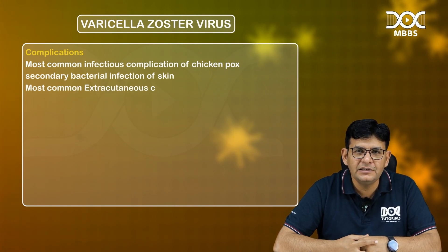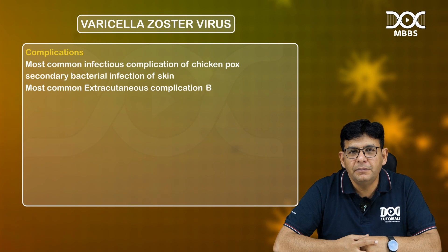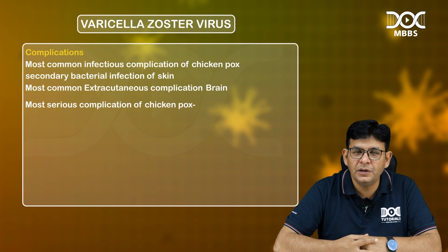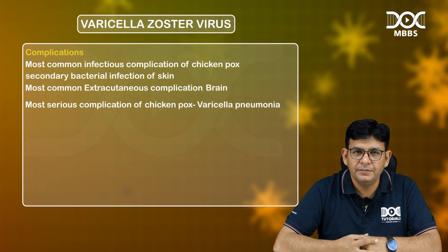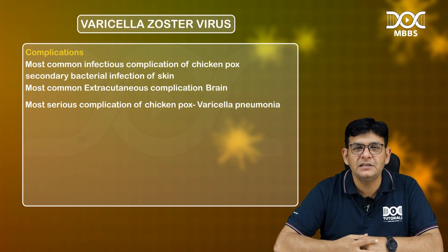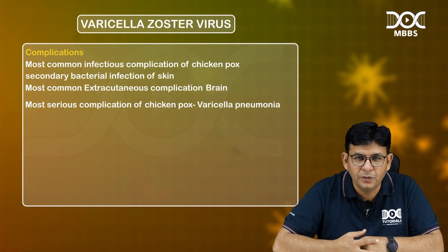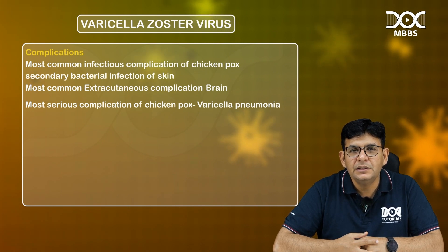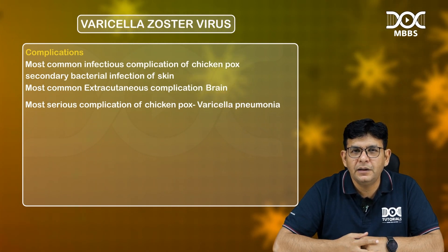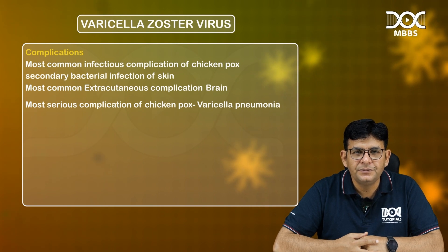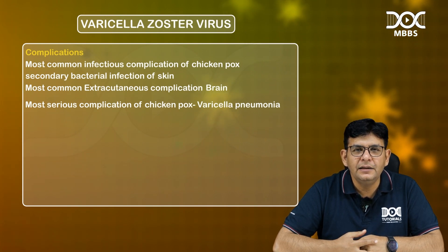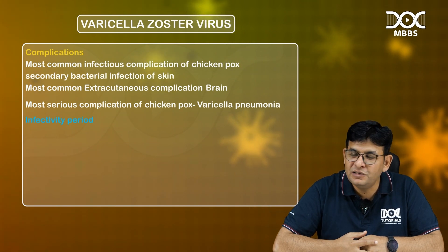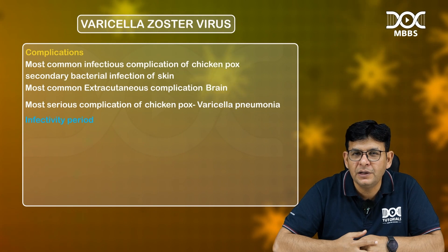The most common extra-cutaneous involvement is the brain. The most serious complication of chickenpox is varicella pneumonia — the virus itself causes pneumonia — which carries significant morbidity and mortality. Remember also that the infectivity period of chickenpox begins with the rash.